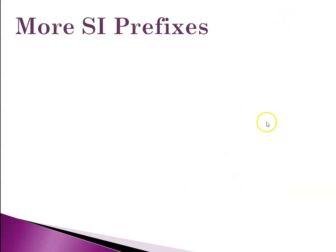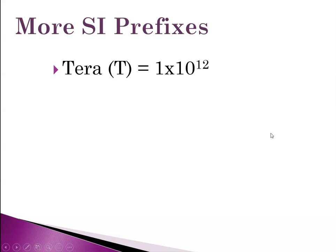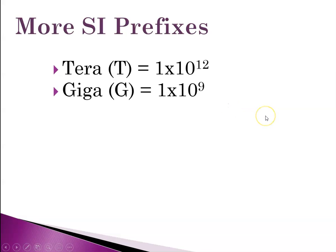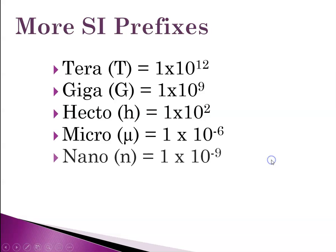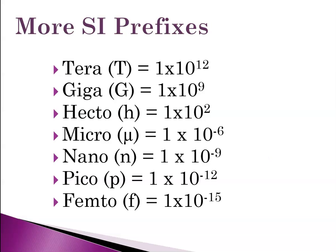A couple more prefixes we'll encounter this year: tera, like terabytes of storage space on your computer, is 10 to the 12th. Giga, like gigabytes, is 10 to the 9th, or a billion. Hecto is 100. Micro is a millionth. Nano is a billionth. Pico is 10 to the minus 12. Femto is 10 to the minus 15.